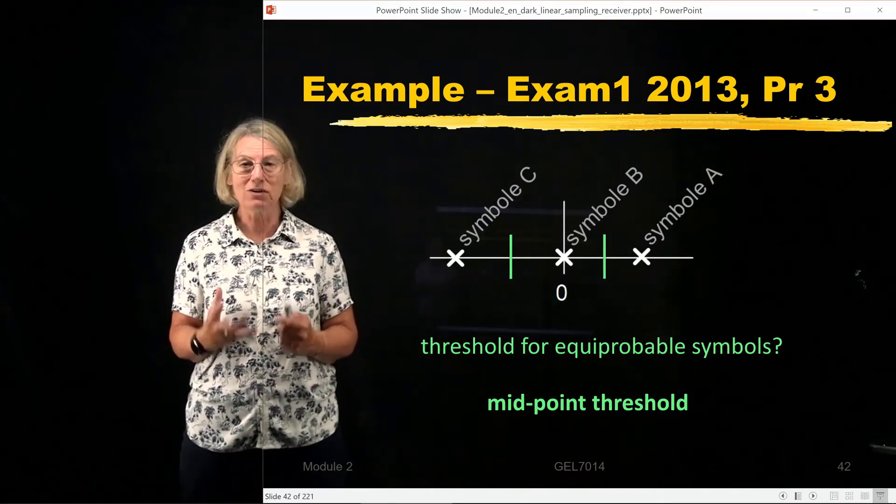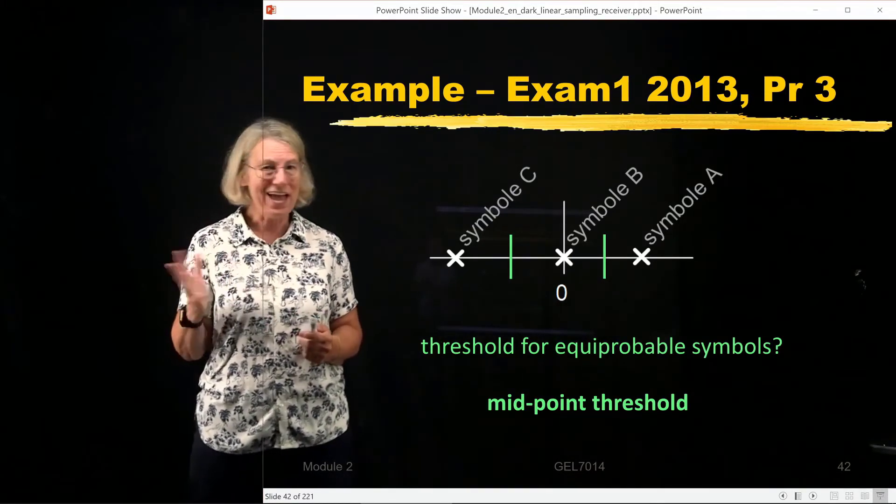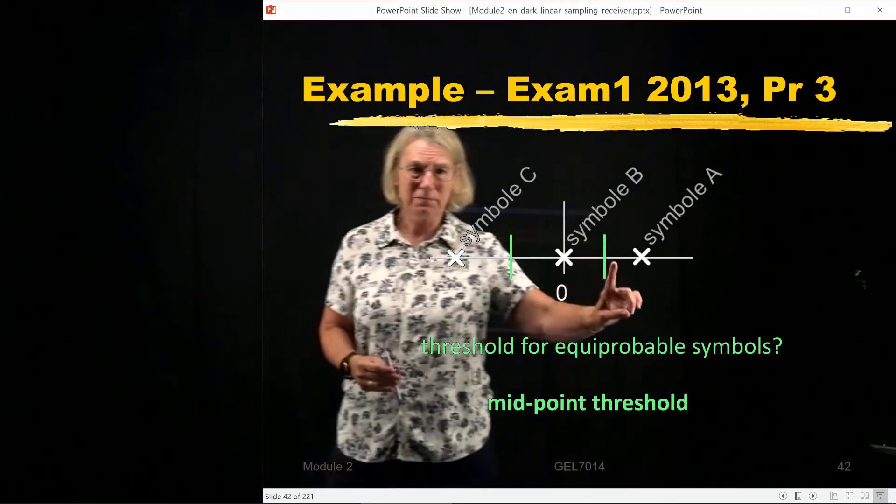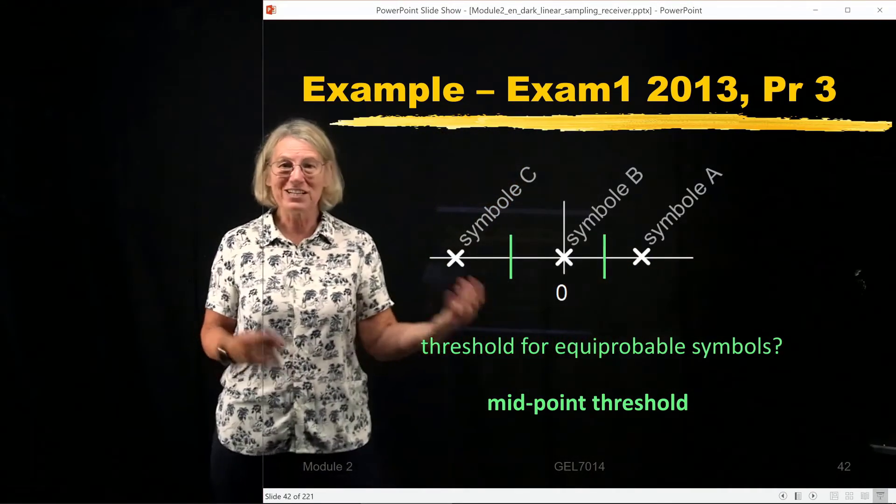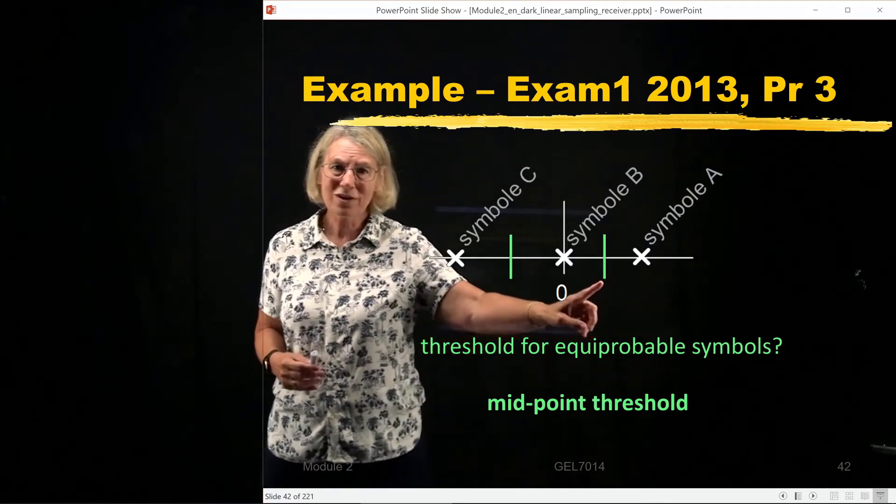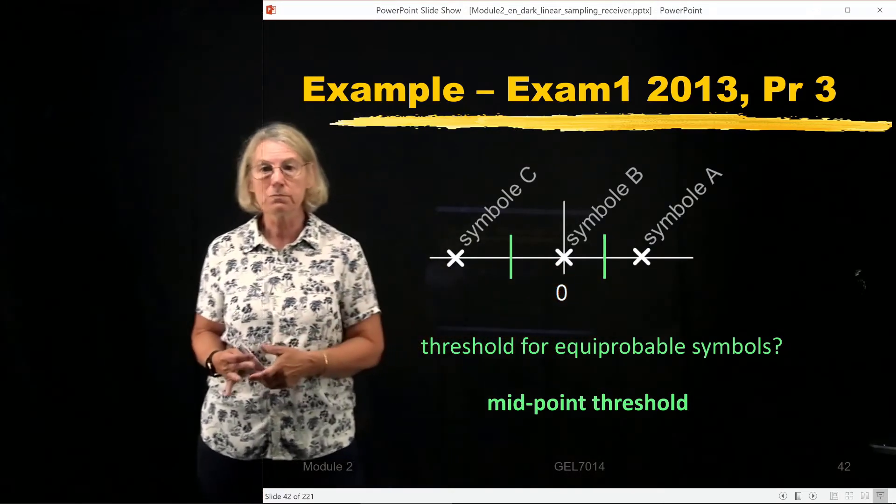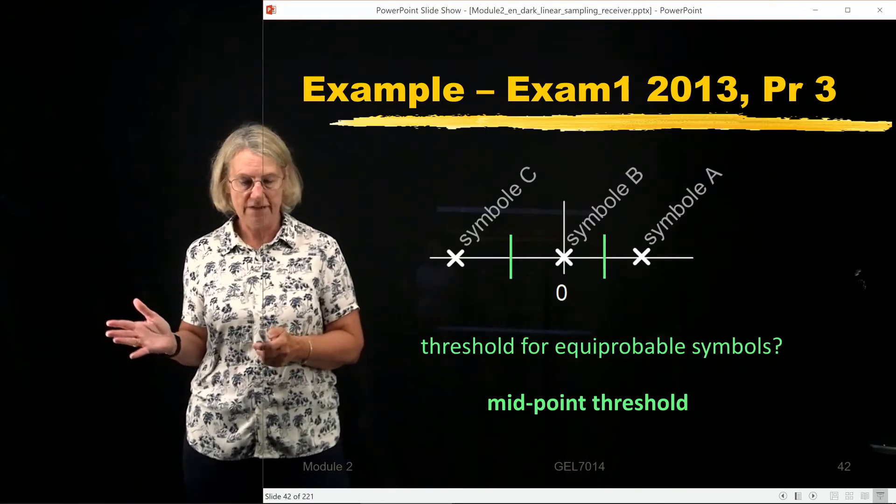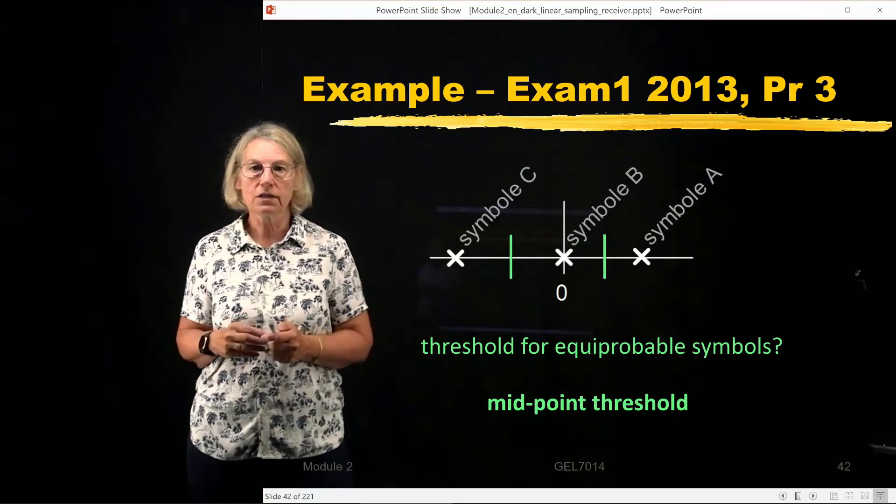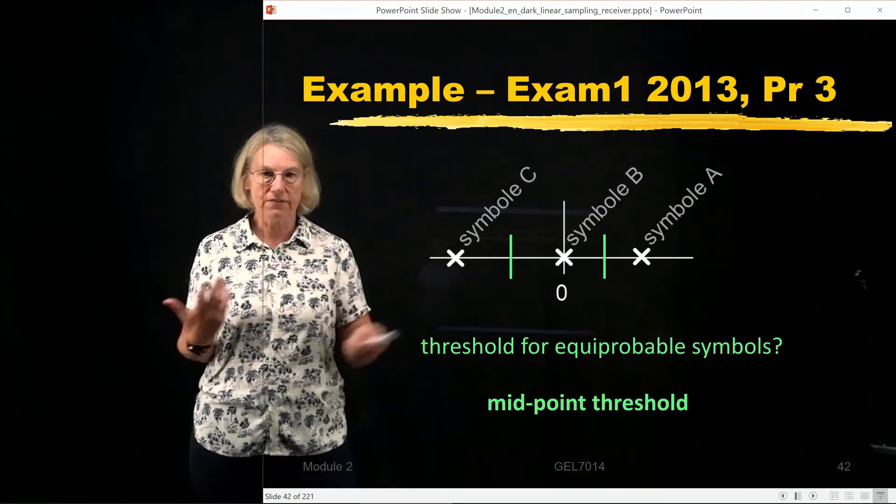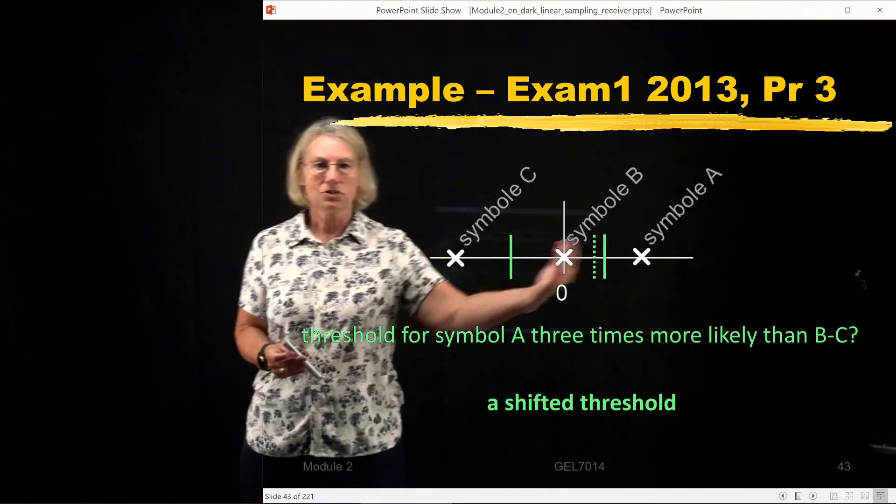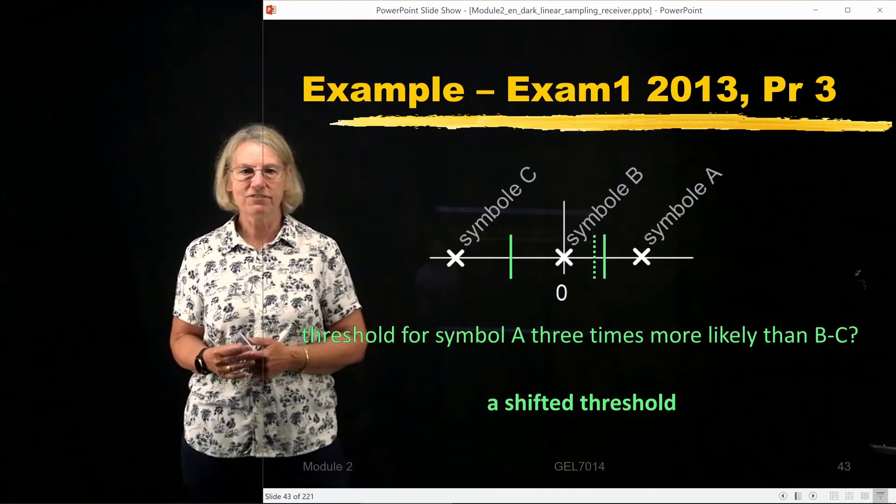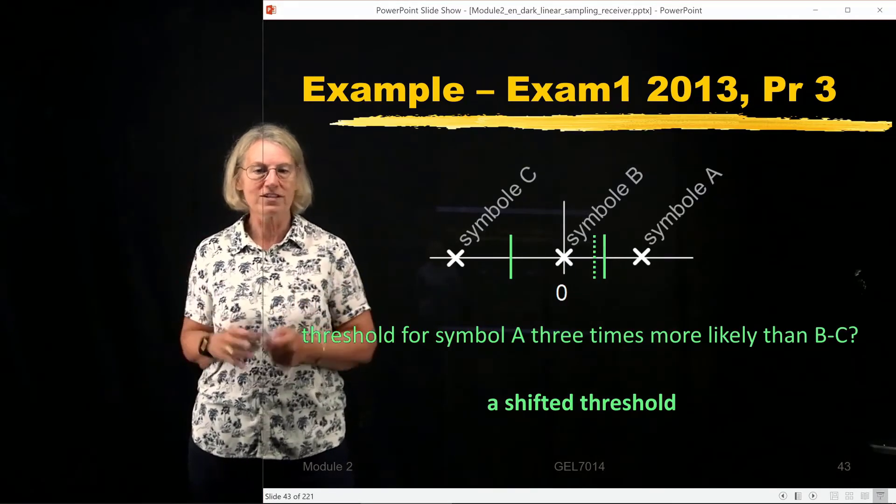It's not just going to be A for this and more. I'm going to want to cheat and take more A's. So for sure, this threshold is going to move. And it's going to move to the left. How much? Well, you can look in the problem and for the specific values you can calculate how much it moves. So shifted threshold if A is three times more likely, but where exactly you have to calculate.